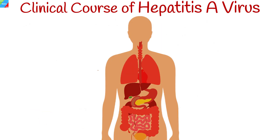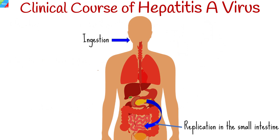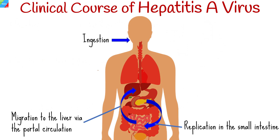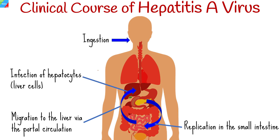Following ingestion, hepatitis A replicates in the small intestine, migrates to the liver via the portal circulation, and infects hepatocytes through interactions with membrane-bound receptors. Mature hepatitis A variants are then excreted into bile and feces.